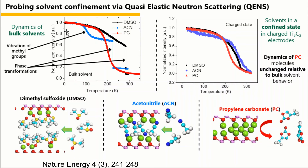To experimentally confirm the confinement of each solvent, we perform quasielastic neutron backscattering, which is ideal for examining solvated species. Comparing the neutron backscattering spectra, there is a clear difference between the bulk electrolyte and the charged-state MXene. The phase transition observed in the bulk electrolyte vanishes in the charged electrode, suggesting the confinement of DMSO and acetonitrile within the MXene. Especially for the acetonitrile system, the vibration of the methyl group is also suppressed in the electrode, consistent with the compact stacking of acetonitrile between MXene layers.